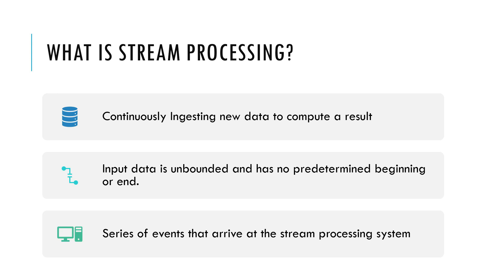First of all, let's start with what is stream processing. Stream processing means we are talking about data that is continuously getting ingested. It is a continuous ingestion of new data to compute a result. The input data here is unbounded — there is no predetermined beginning or end because we are talking about streams of data coming in, small chunks of data coming in in near real time. You can consider this as a series of events that arrive at the stream processing system. It can be web clicks, data coming in from different third-party systems, or sensor data that we are capturing and sending.